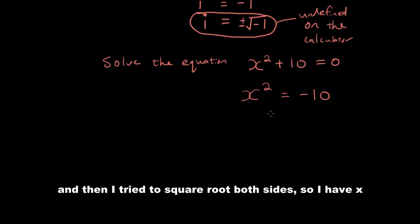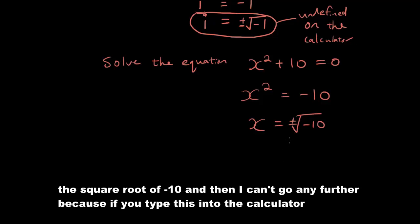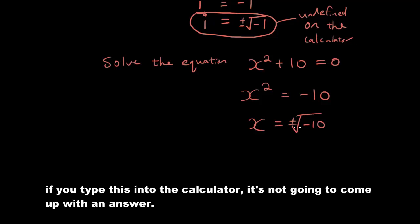And then I try to square root both sides. So I have x is equal to the square root of negative 10 plus minus the square root of negative 10. And then I can't go any further because if you type this in the calculator, it's not going to come up with an answer.